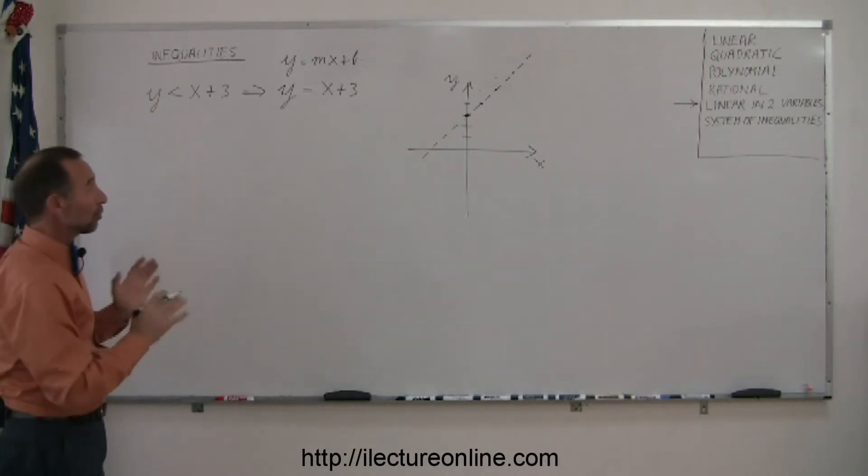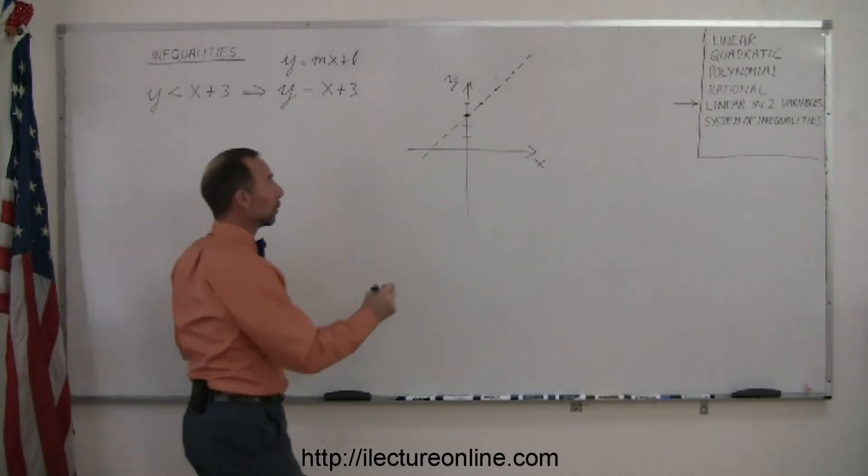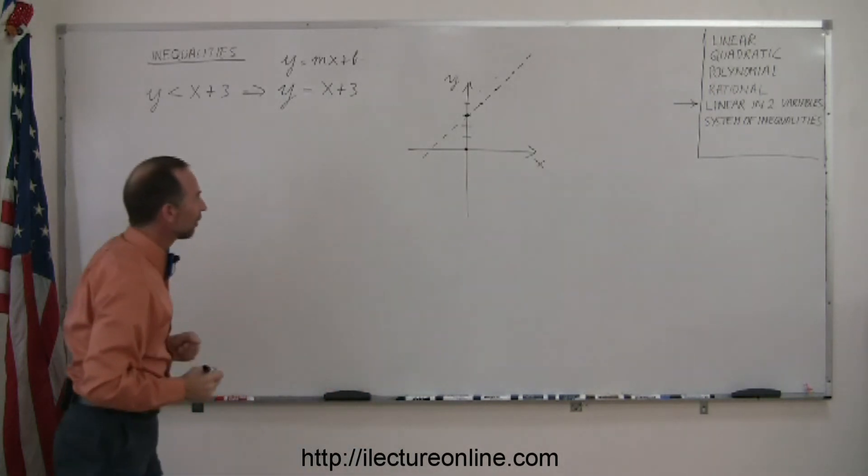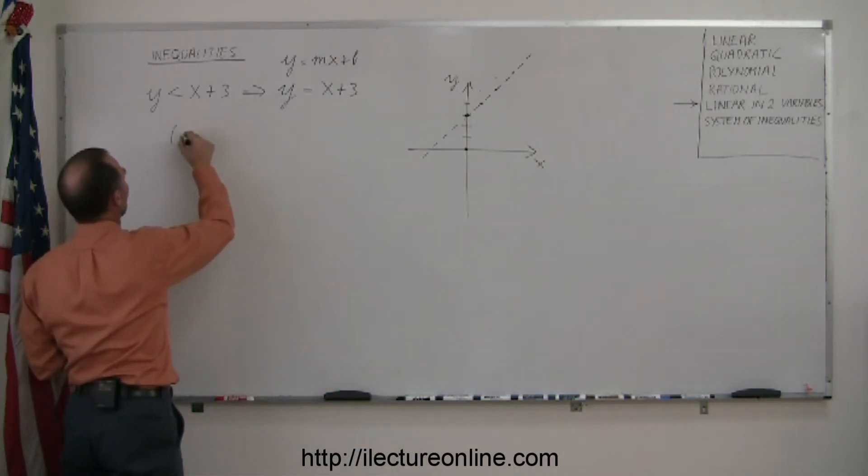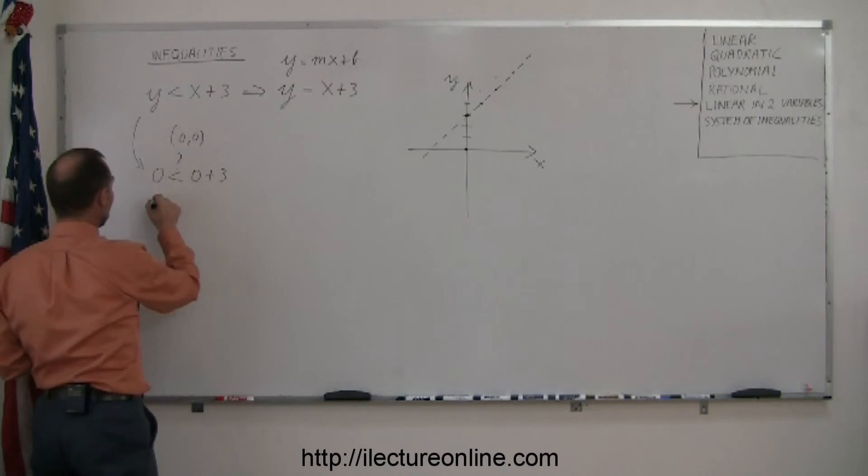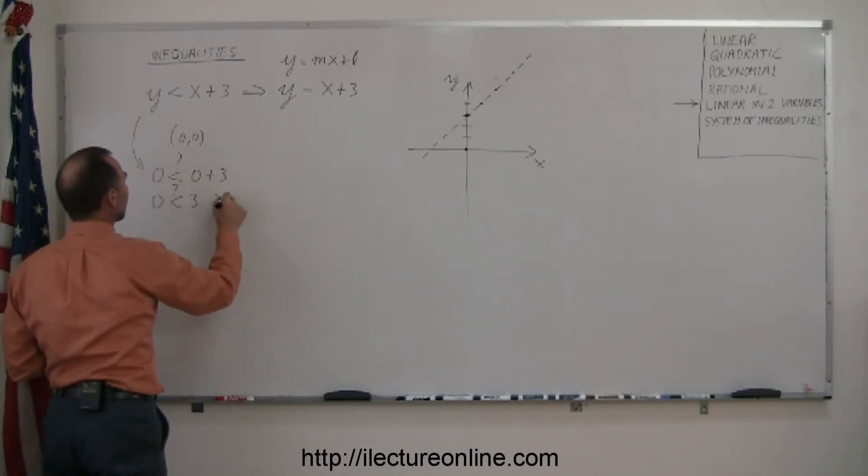So now to find out which of the two regions does satisfy the inequality, we're going to take a test point, and 0, 0 is always a preferred test point. So we try the point 0, 0 for x and y. When we plug that in, we get 0 less than 0 plus 3. Is that a true statement?